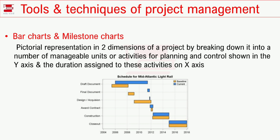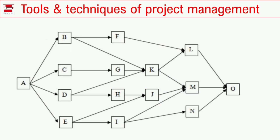Now the next step is the network technique. Let's go to the network technique. Now let's say activities A, B, C. You can see events one, two, three — we can see one activity.